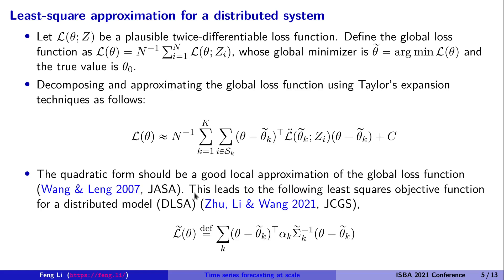This leads to a least-square objective function, so we can define our objective function based on least squares across multiple machines. This result is available for regression-type models and was recently published in the JCGS paper.